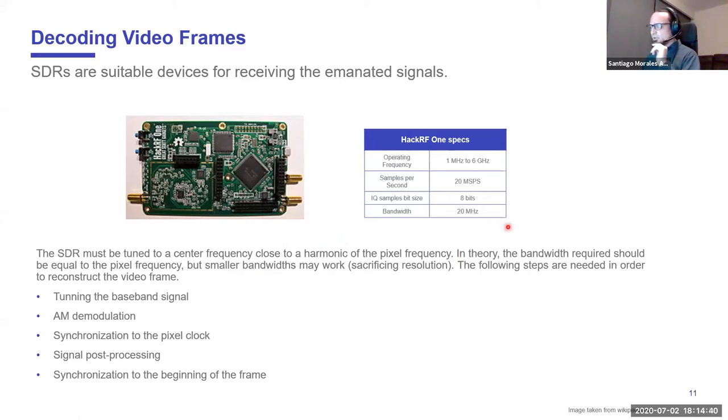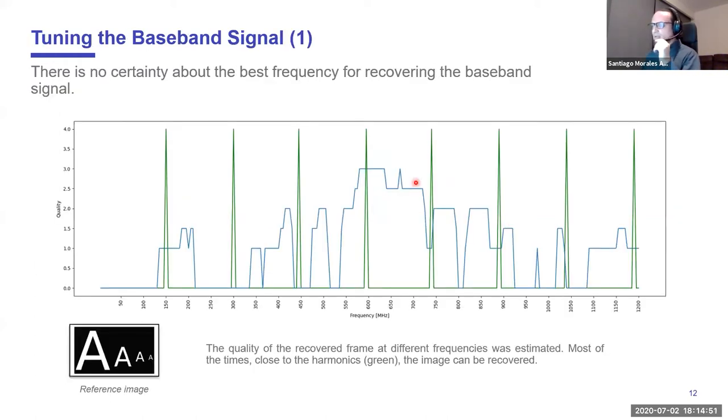They also have a decent bandwidth for these tasks. For example, this one has 20 megahertz of bandwidth. Maybe this is not enough to recover the whole spectral density of the baseband signal, but it allows us to recover part of the information. We did a little experiment. Here in green I'm showing you the harmonics of this frequency of full HD, again 148.5 megahertz. Here is the first, second, third, and seventh harmonic.